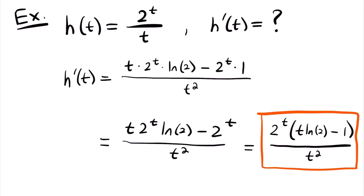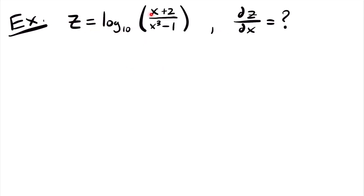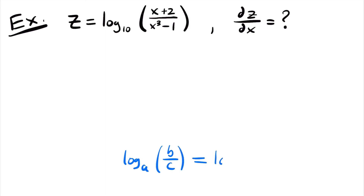Alright, let's look at one more example for this video. Here we have z is equal to log base 10 of x plus 2 divided by x cubed minus 1, and we want to find the derivative dz/dx. Notice that the inside function of the log function is a quotient, so taking the derivative would require using the quotient rule, which takes a bit of extra work. To avoid that, we will use another property of logarithmic functions — the quotient property — which says that the log base a of b divided by c is equal to the log base a of b minus the log base a of c.